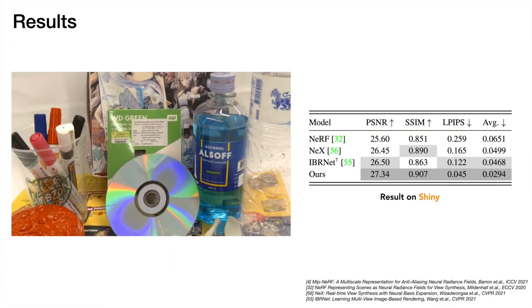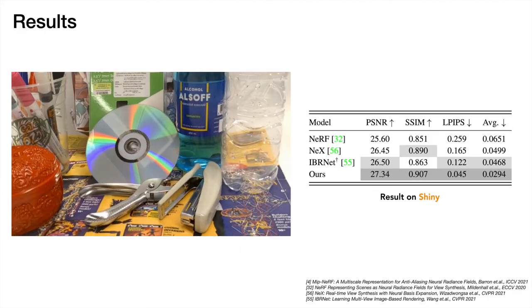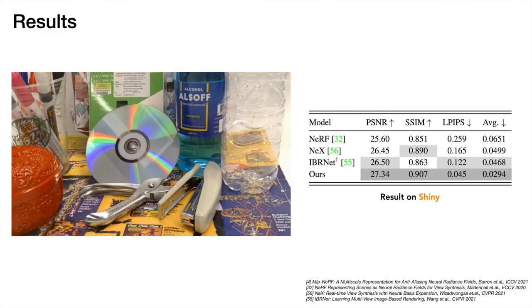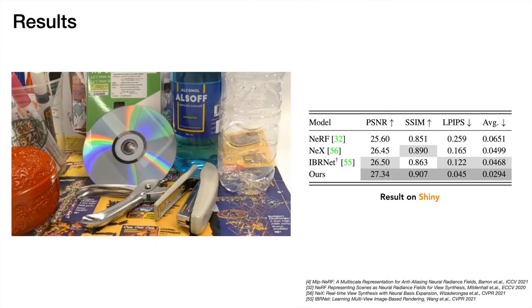Finally, on the Shiny dataset, our model achieves new state-of-the-art results. Our model's ability to reconstruct such complex view-dependent effects can be attributed to the attention-based aggregation mechanism that chooses to either interpolate colors and features from reference views or directly predict from light field coordinates.